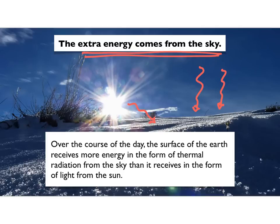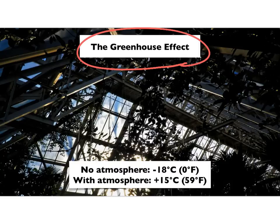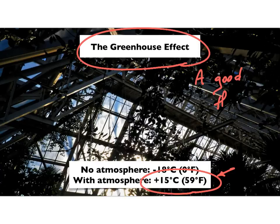This is the greenhouse effect. In the atmosphere, gases absorb thermal radiation that the Earth is emitting and re-radiate it downward — providing the extra sky shine. With those gases in the atmosphere, we get a temperature of 59 degrees Fahrenheit (15°C) — the average temperature on the surface of the Earth. The greenhouse effect is a good thing. Without it, there would be no life on Earth.